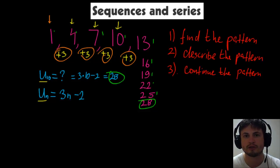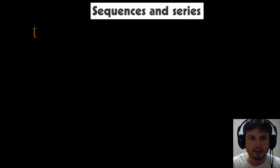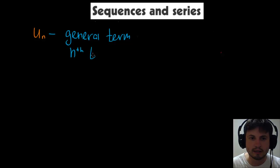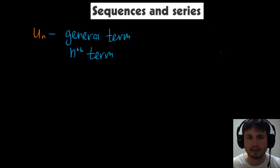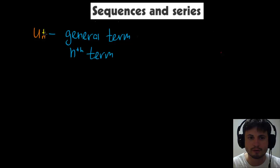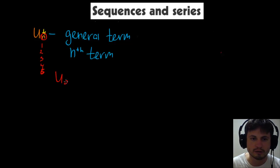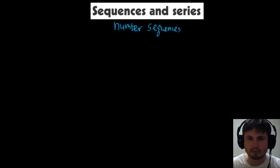The most important term to know in this chapter is the general term, also called the nth term. On your exam you'll see questions about the nth term or general term — just know it refers to finding the number at position n in a sequence. Note that n is always a whole number — 1, 2, 3, 4, 5 — it cannot be a fraction. So u5 means the fifth term.